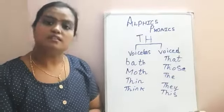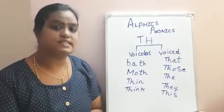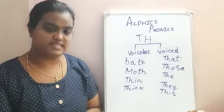So voiceless is TH, TH, TH. Whereas voiced is TH, TH, TH. Let us look at some of the examples here.